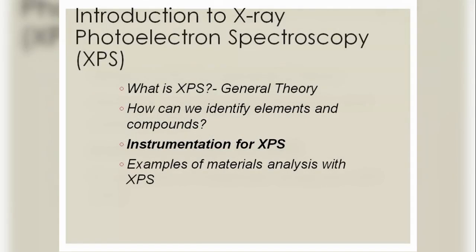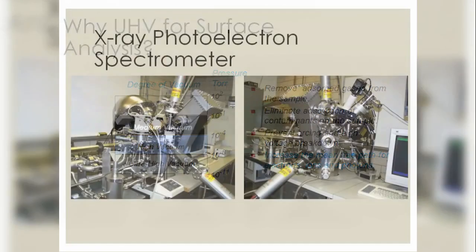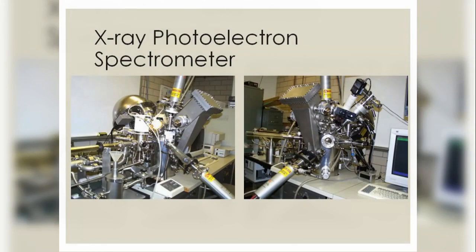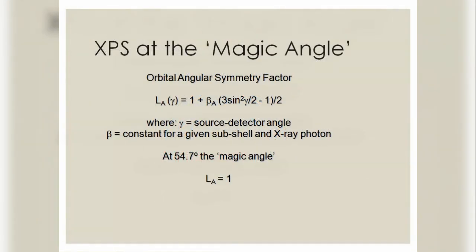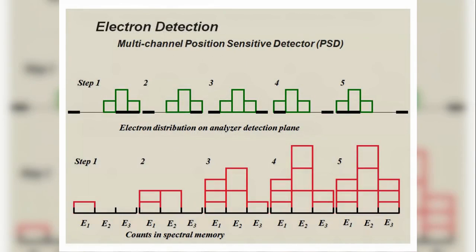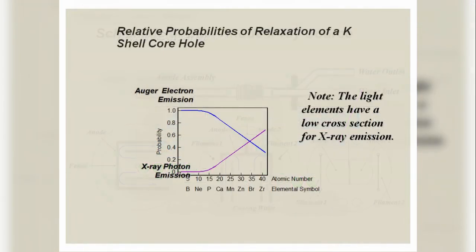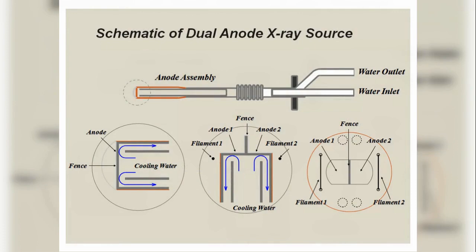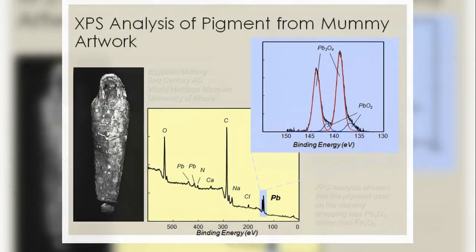Instrumentation of XPS. The instrument used for XPS is known as the UHV chamber with monochromatic soft X-rays, analyzing the energies of the emitted electrons. The spectrometer consists of a magic angle for the orbital angular momentum symmetry factor, electron detection using multi-channel position-sensitive detectors, X-ray generation with dual anode X-ray source, and X-ray monochromator.